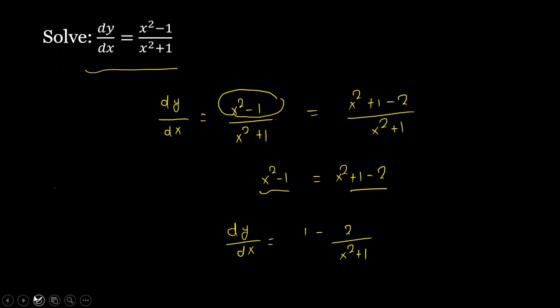So dy is equal to 1 minus 2 divided by x squared plus 1 dx. We integrate both sides.